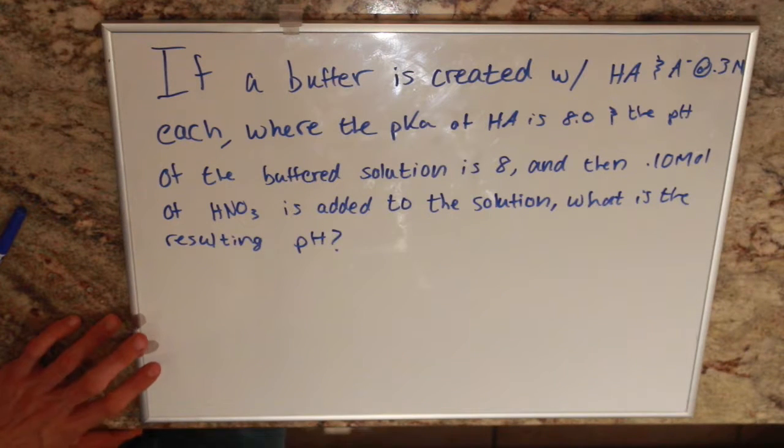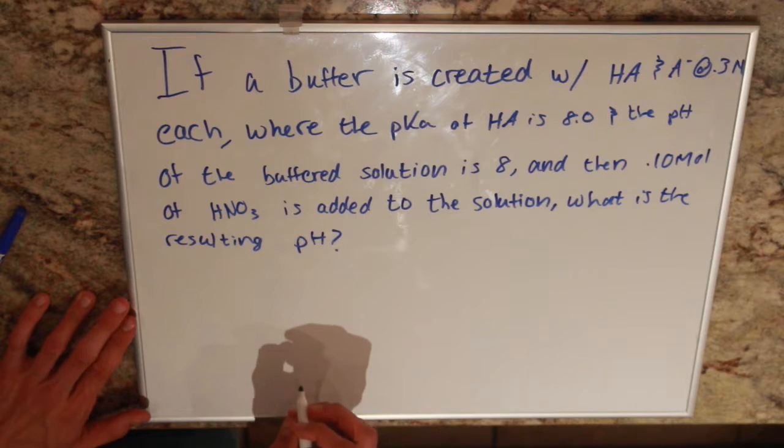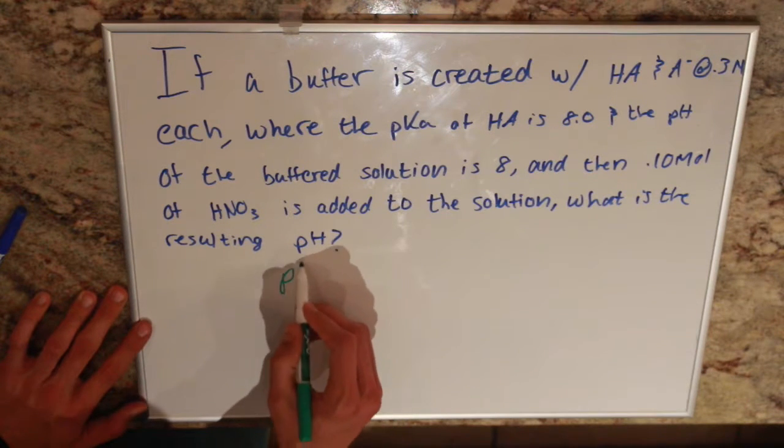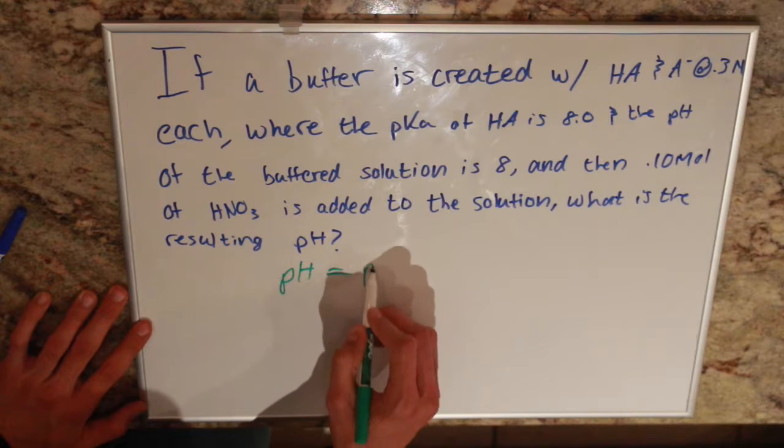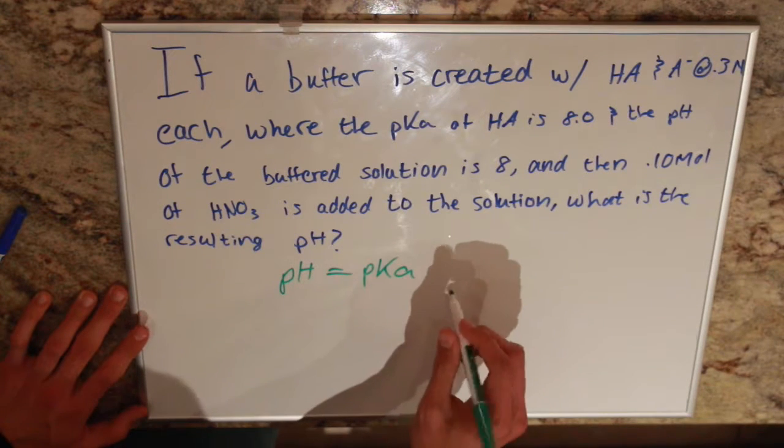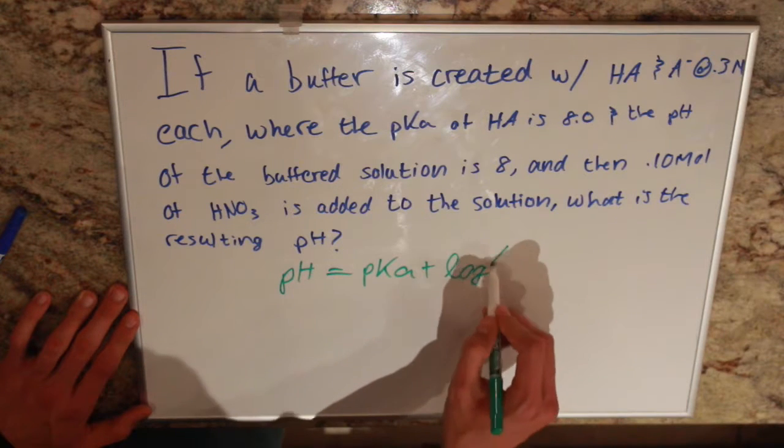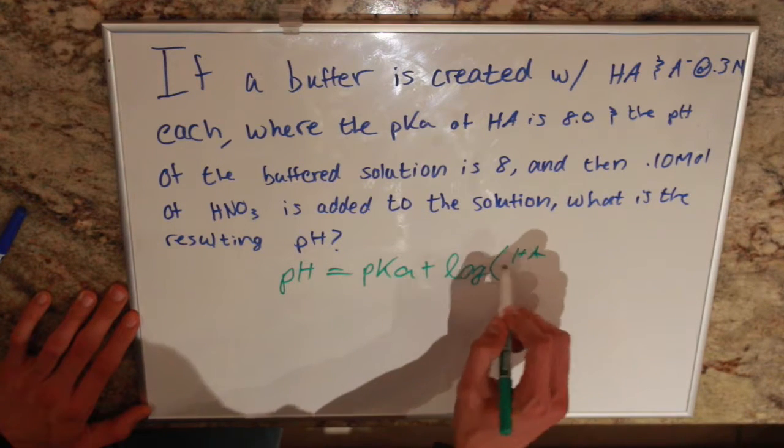So, it's a pretty simple one. We'll start out with our equation of pH equals pKa plus the log of HA over A.